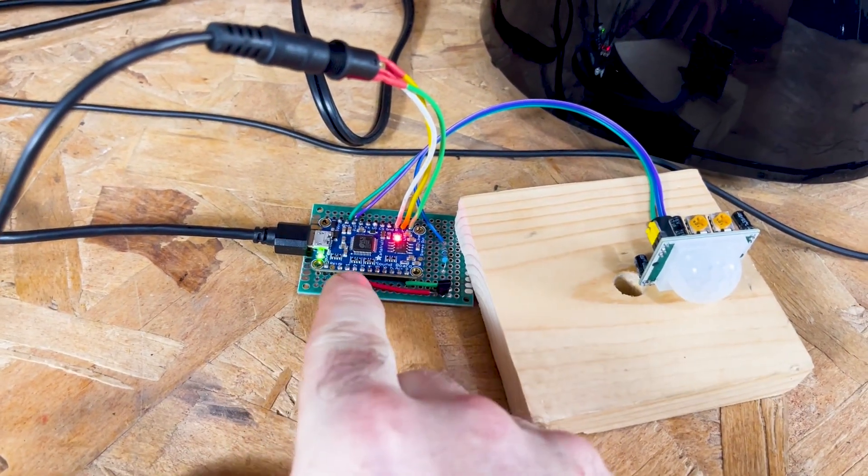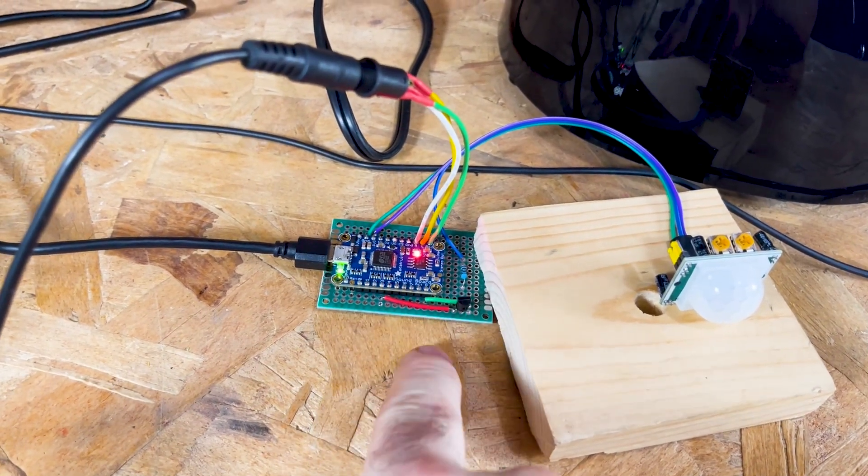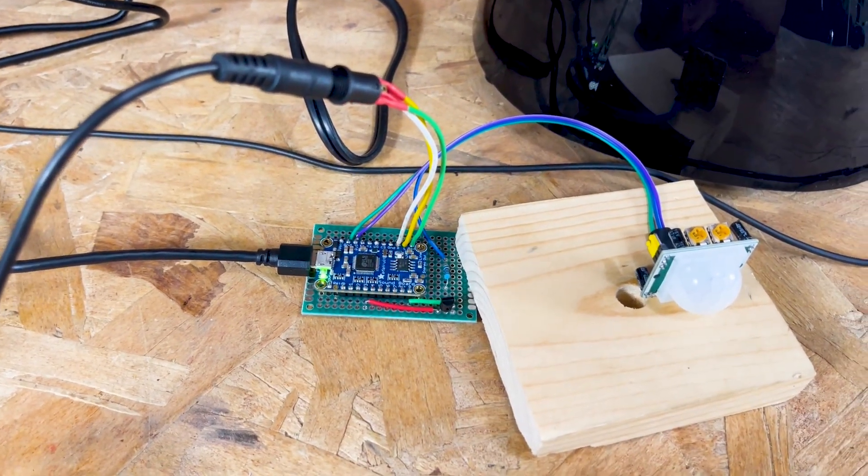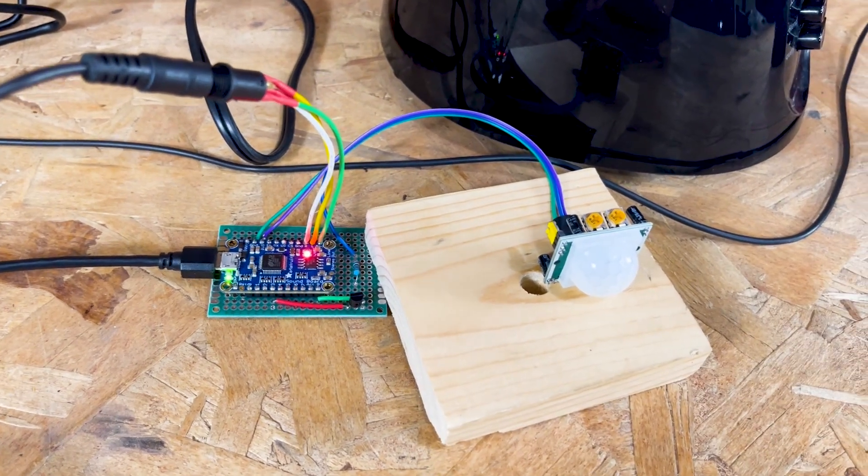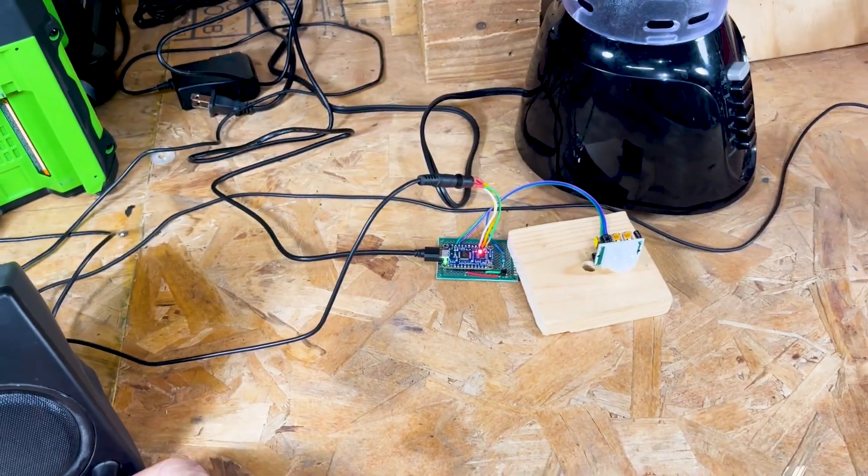And essentially, you just take these buttons. When you push a push button, it triggers it to ground, or connects it to ground, which triggers that pin. But in my case, I got a little PIR passive infrared sensor hooked up, so when it senses movement, it'll trigger a sound. And I'll do a little demonstration real quick.